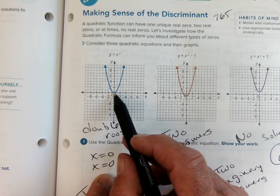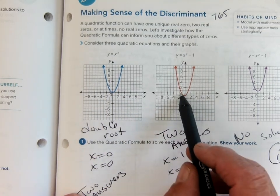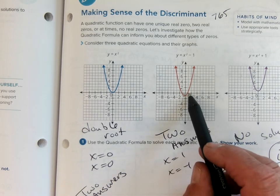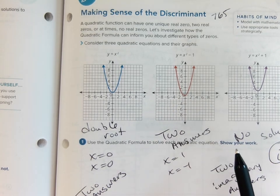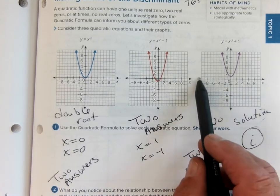But we have to call it a double root. There are two answers in this one because it crosses here and here, so the two answers are one and negative one—positive one on the x-axis, negative one. On this one though, it doesn't cross the x-axis at all, so there's no solution. It never crosses the x-axis. Now let's talk about why.